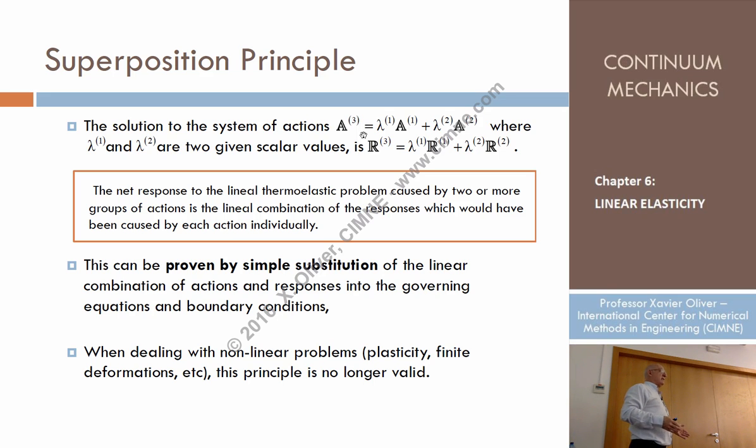So now, according to the code - the European code, the Spanish code, whatever is the code - I have to compute the response under a certain combination: 1.5 the self-weight minus 1.0 the wind minus 0.5 the snow. This is like a post-process. That means, knowing the responses for every action, I don't need to compute for computing the combination. I just combine the responses, which is much more trivial.